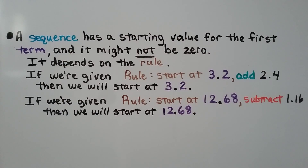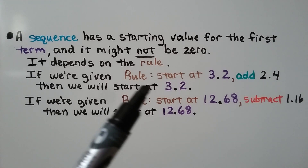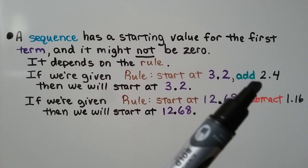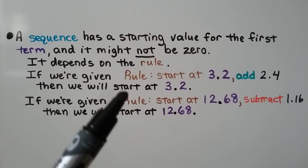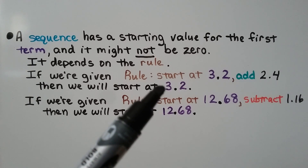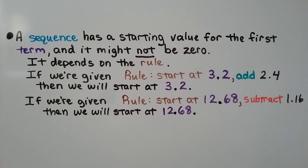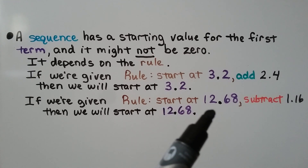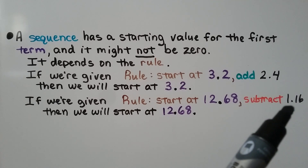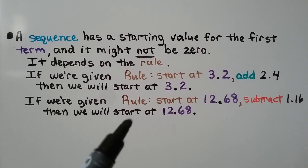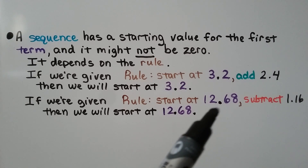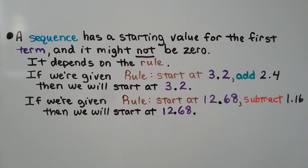A sequence has a starting value for the first term, and it might not be 0 — it depends on the rule. If the rule says start at 3 and 2 tenths and add 2 and 4 tenths, then our first term is 3 and 2 tenths, and we add 2 and 4 tenths each time. If the rule says start at 12 and 68 hundredths and subtract 1 and 16 hundredths, we start at 12 and 68 hundredths and subtract 1 and 16 hundredths to get each subsequent term.